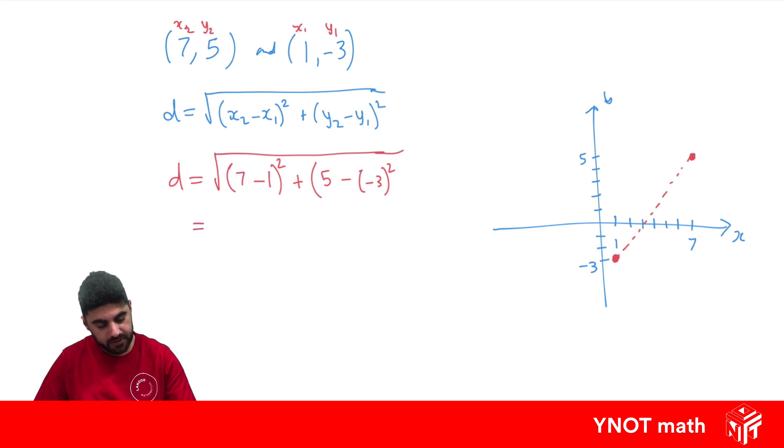Let's simplify that. 7 minus 1 is 6, so we have 6 squared, plus 5 minus -3. That's 5 plus 3, which is 8. So we have 8 squared. 6 squared is 36, 8 squared is 64. 36 plus 64 is 100. We get the square root of 100, which is exactly 10.